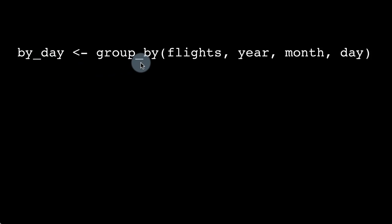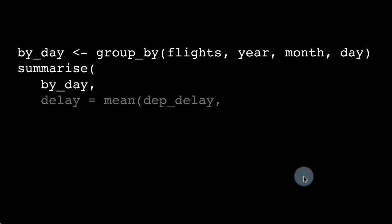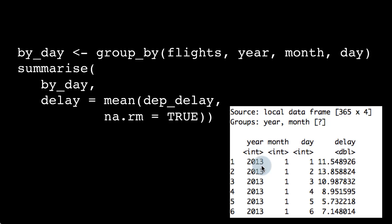Here we're taking another example: by_day is group_by(flights, year, month, day). When you print out by_day, obviously there are 365 days in the year and therefore there are 365 groups, because it's grouped by all three of those variables. We can then summarize to get the mean departure delay, with na.rm = TRUE, for every day. For every day there are 365 groups based on year, month, and day, and delay is the average delay calculated for each day — so there's one row for each day: 2013 January 1, 2013 January 2, 2013 January 3, and so on for 365 days.